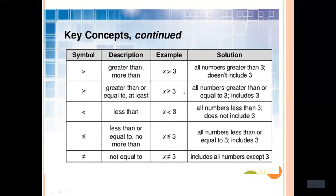Greater than or equal to means 'at least': x is at least 3 means x is greater than or equal to 3. All numbers greater than or equal to 3, including 3, which is included in the solution set. Less than: x is less than 3 means all numbers less than 3, not including 3. Less than or equal to means 'no more than': x is less than or equal to 3, all real numbers less than or equal to 3, includes 3. Not equal to: x is not equal to 3 means includes all numbers except 3.